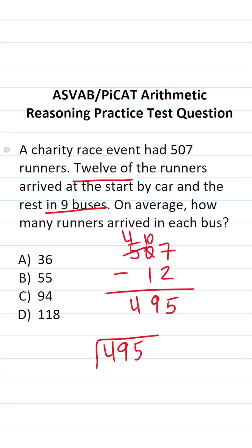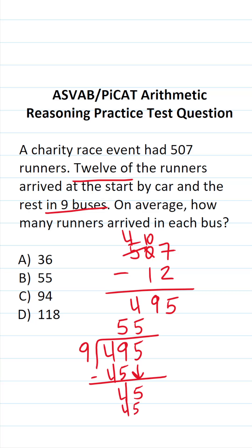To answer this second part — how many runners arrived in each bus on average — we're going to do 495 divided by nine. Nine doesn't go into 4. Nine goes into 49 five times without going over. Nine times five is 45. 49 minus 45 is 4. Drop down this 5. Nine times five is exactly 45 with no remainder. So we can see that there were an average of 55 runners on each of the nine buses.